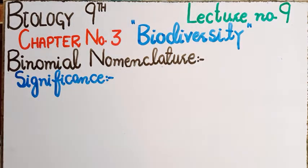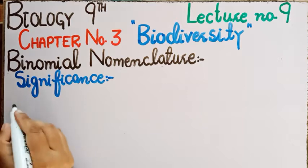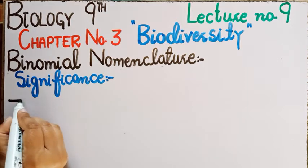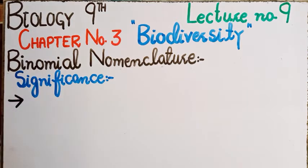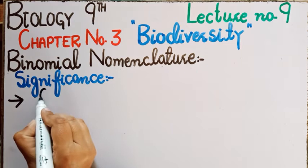Significance کا مطلب ہے اہمیت — binomial nomenclature کی اہمیت کیا ہے، why the system became very popular. سب سے پہلی بات یہ ہے کہ binomial nomenclature کو بنانے کی ضرورت اس لیے پڑی کہ different countries میں یا ایک ہی country کے different regions میں ایک organism کو different ناموں سے پکارا جاتا ہے، جس کی وجہ سے confusion create ہوتی ہے۔ فار ایگزامپل، onion کی مثال لیتے ہیں۔